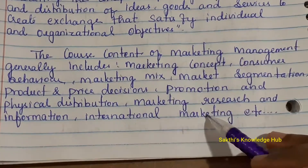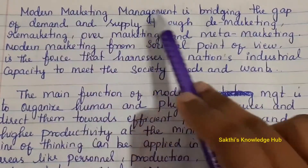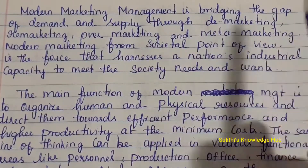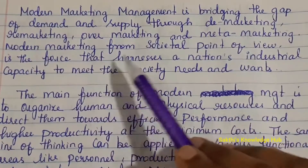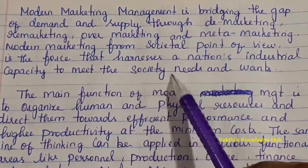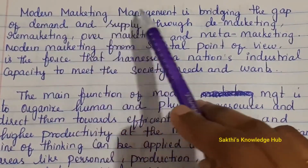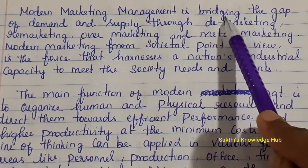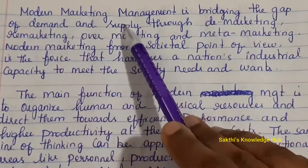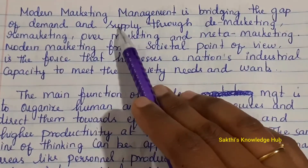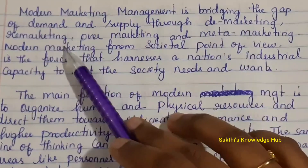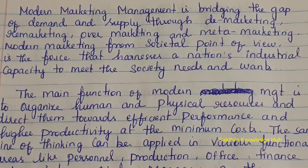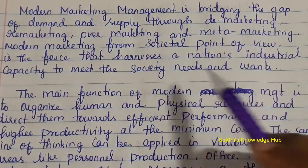The course content of marketing management generally includes: marketing concept, consumer behavior, marketing mix, marketing segmentation, product and price decisions, promotion and physical distribution, marketing research and information, and international marketing. Modern marketing management bridges the gap of demand and supply through demarketing, remarketing, over-marketing, and meta-marketing — connecting demand and supply to satisfy the needs and wants of the customer and society.